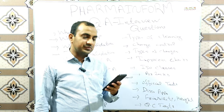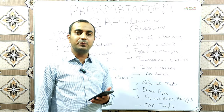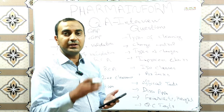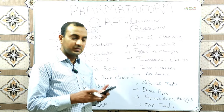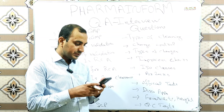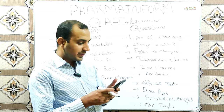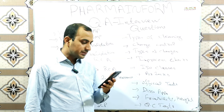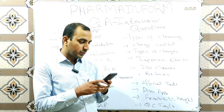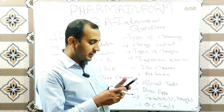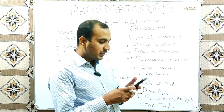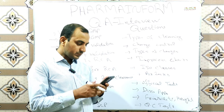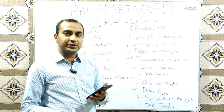What is cGMP? cGMP refers to Current Good Manufacturing Practices. The 'C' is always written in small letters and refers to 'current.' cGMP is the use of current standards and systems to provide high quality products. cGMP gives a system that ensures proper design, control, and monitoring of the manufacturing process and facilities.